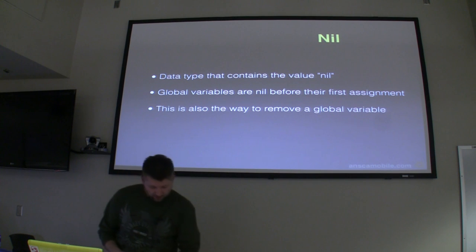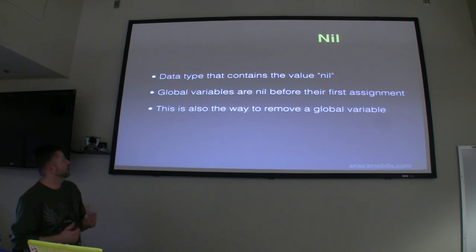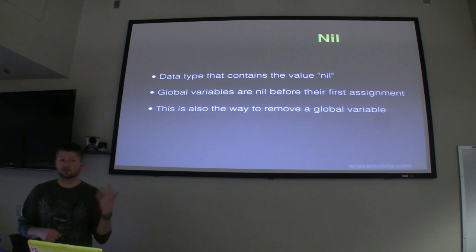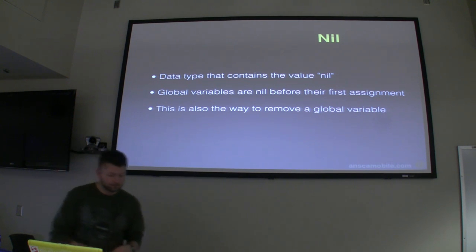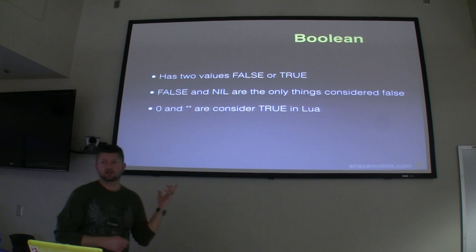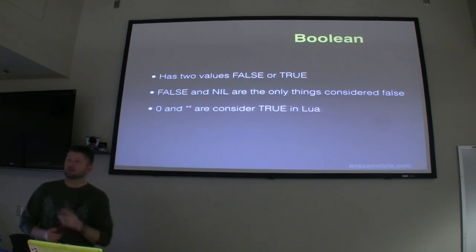The nil type simply contains nil — it's your way of also setting global variables for removal and queuing them up for garbage collection. When you first declare a global variable but haven't assigned it yet, it'll contain nil. Once you assign a variable to nil, it'll stage it for garbage collection. Booleans are false and true. A couple of nuances: zero and empty string are considered true in Lua — that's different from a lot of languages and can mess you up. The only things considered false are false and nil.